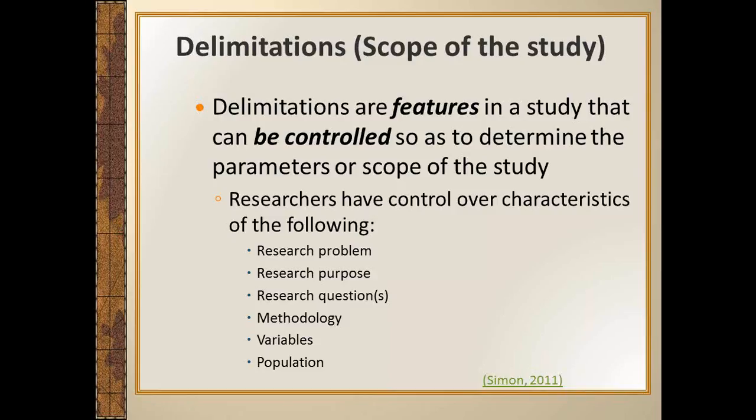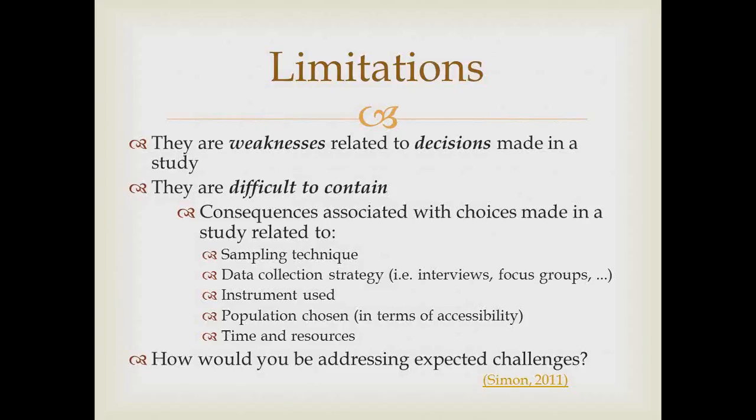That's all about delimitation — it's not limitation. Limitation, you know, is a weakness related to the decisions that you make in your study. So you decide, for example, the sample size or sample technique that you want to use — there are strengths and limitations to that. Any decision that you make, especially concerning the population, the time, the system and resources, and the data collection strategy you're going to use — maybe interviews — has its own strengths and limitations. Think about what decisions you are making in your study and what are the consequences associated with those decisions.